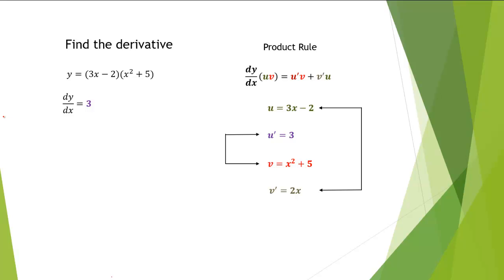So here we have the derivative with respect to x, that's equal to u prime. Notice that u prime is 3 times v, and v is x squared plus 5. We have plus v prime. We see that v prime is 2x times u, and u is 3x minus 2.